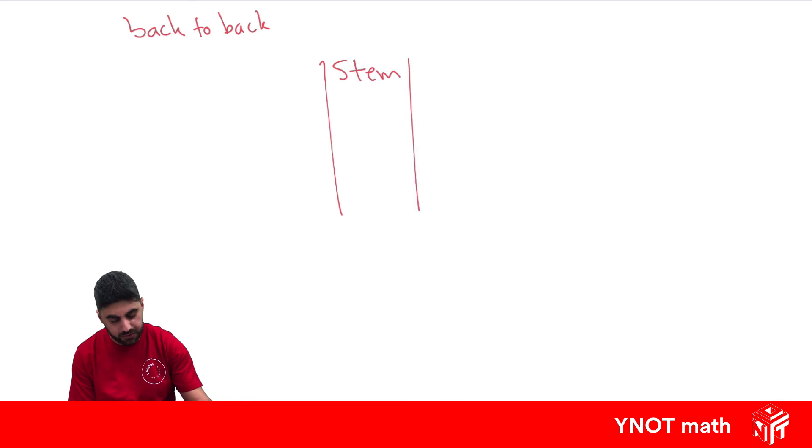Might be something like this where we have, now stem, so these are called back to back stem and leaf plots. We have our stem in the middle: 0, 1, 2. We have on each side maybe something representing something to do with girls and boys.